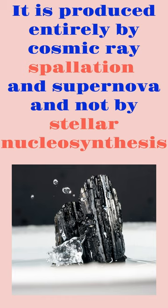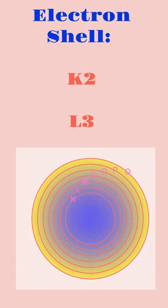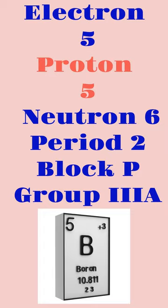Electron Shell: K2L3. Electron Configuration: 1S2 2S2 2P1. Electrons: 5. Protons: 5. Neutrons: 6.